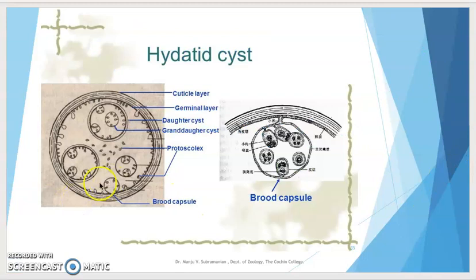A small cyst can be about 1 centimeter in diameter and contain hundreds of protoscolices. Due to their granular appearance, the protoscolices within the cysts are commonly called hydatid sand. The cysts are usually filled with a clear fluid called hydatid fluid. This hydatid disease may become fatal when cysts are found in vital parts of the body; during surgical extraction, the patient could go into anaphylactic shock, suffer high fever, and death can occur.